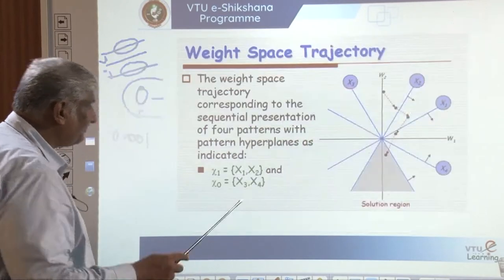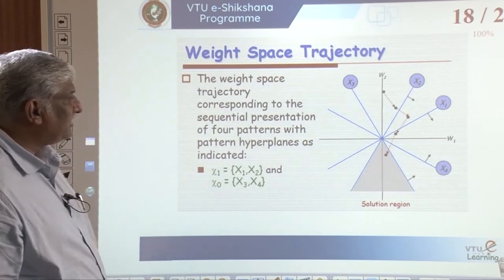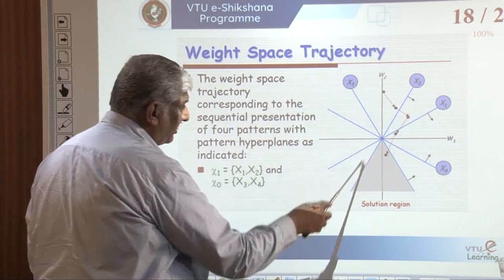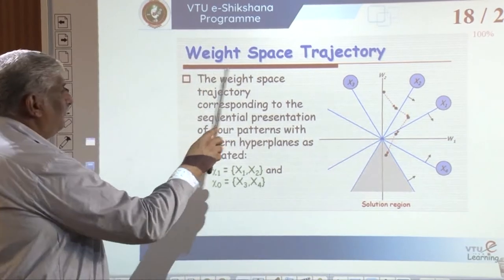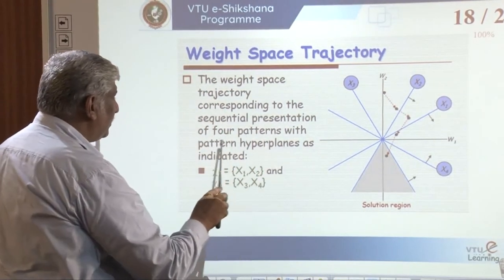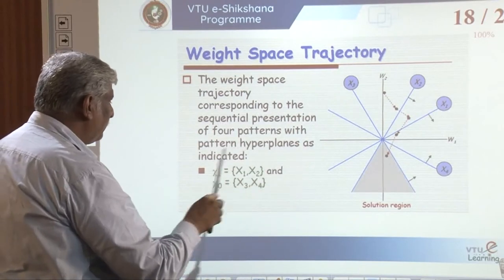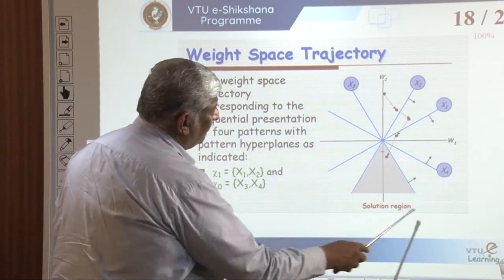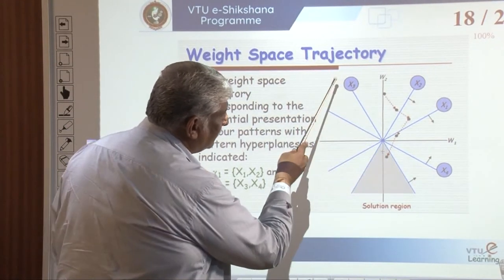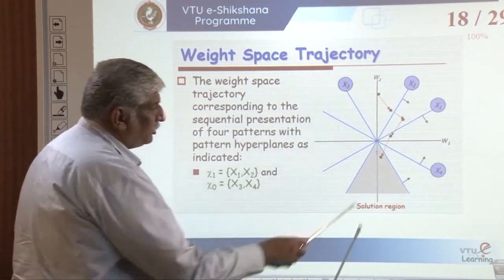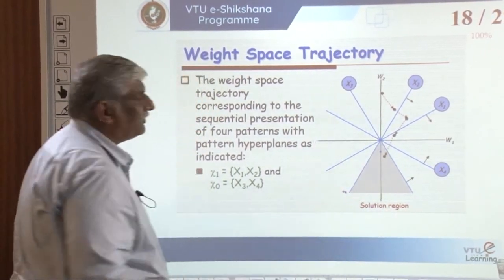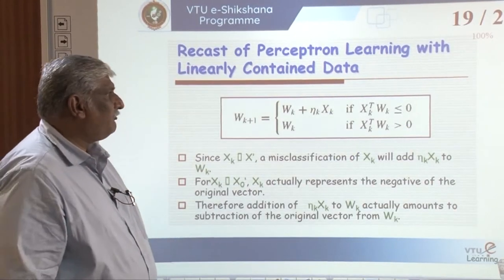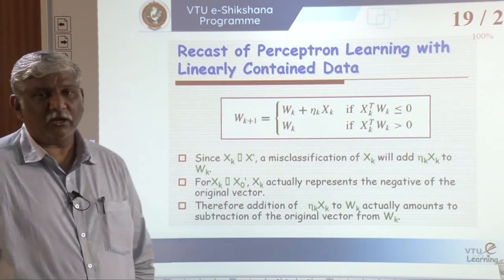The weight space trajectory corresponds to the sequential representation of four patterns with pattern hyperplanes. The weights are slightly moved to arrive at the particular solution region. Now, the recast of perceptron learning with linearly contained data: W_{k+1} equals W_k plus eta_k times X_k, when X_k-transpose times W_k is less than or equal to zero.